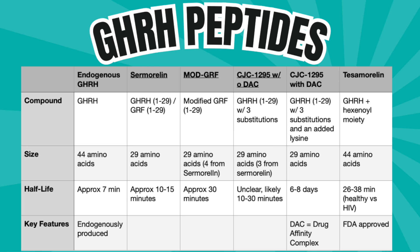Where the difference lies is when we look at CJC-1295 with DAC — the drug affinity complex — which prolongs the half-life significantly to about 6 to 8 days. It has the same 3 amino acid substitutions as CJC-1295 without DAC, but there's also an added lysine molecule that helps serve the linkage to the drug affinity complex.